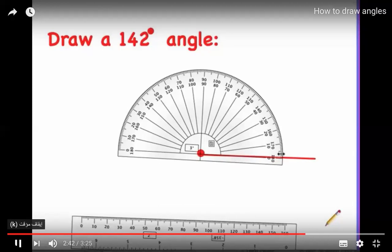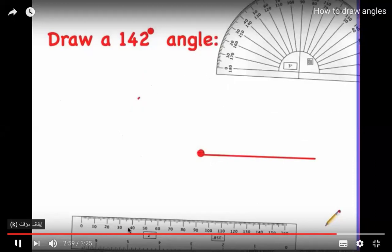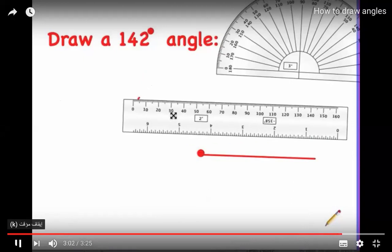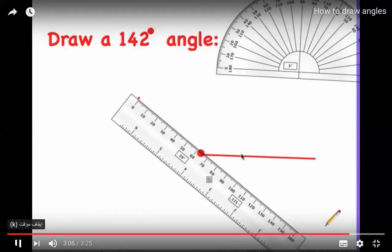On the right side, use the inside numbers starting at zero. Count up to 140, then go two more degrees to 142 and make a dot. Move the protractor away, get your ruler, line it up with the dot and the vertex, and draw a straight line — you now have a 142-degree angle.